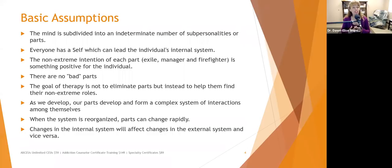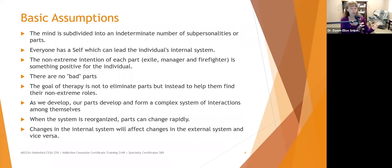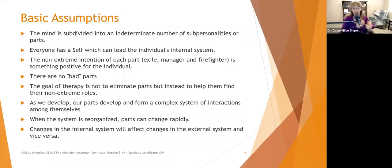As we develop, our parts develop and form a complex system of interactions. Think of an actual family — when mom and dad got together, that family developed, and each new child changed the structure of those relationships. Our parts are similar. When the system is reorganized — when we help the manager not feel like it has to be in total control, or help the firefighter feel like things are under control — those parts can stand down and reorganize rapidly.